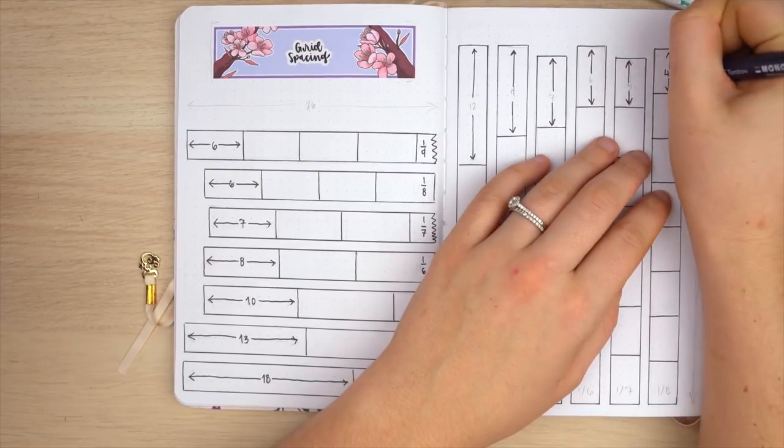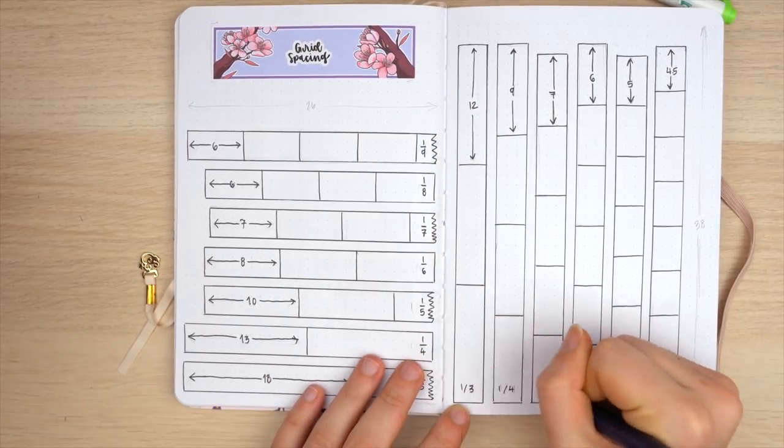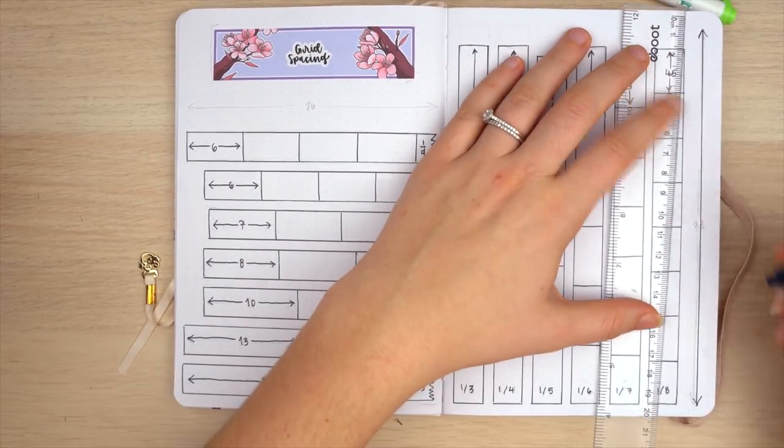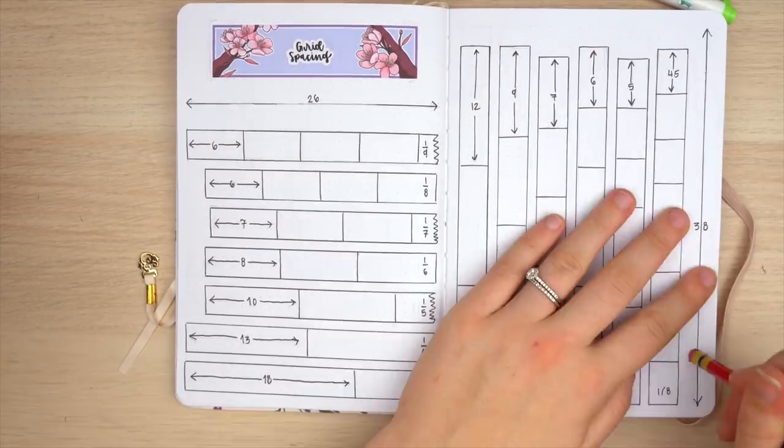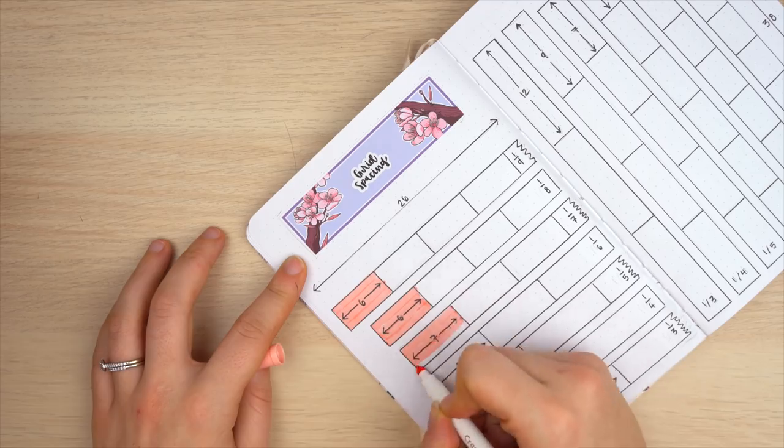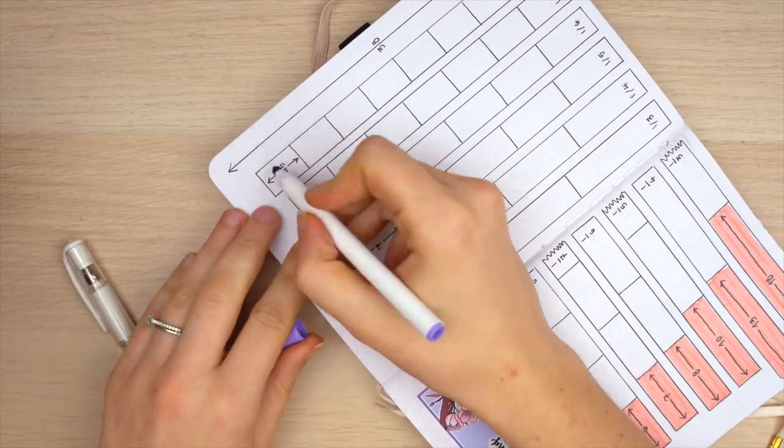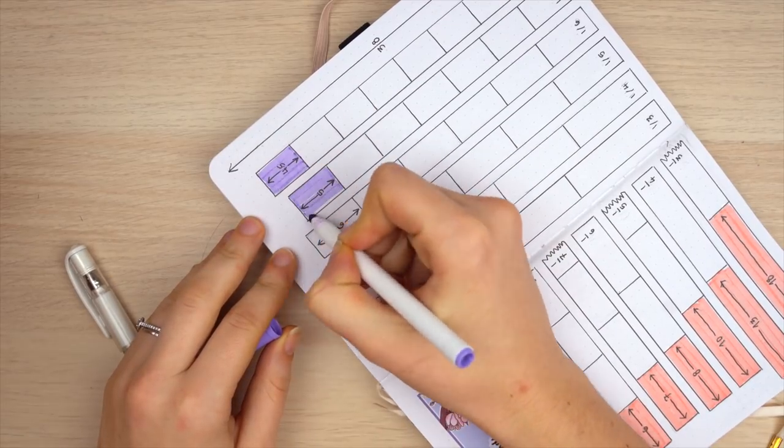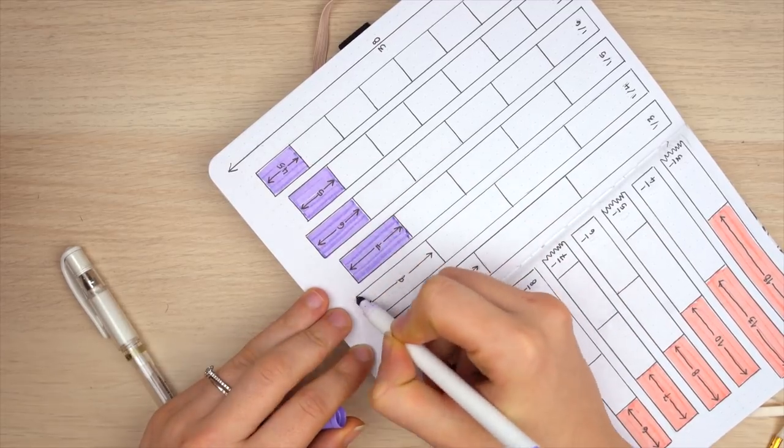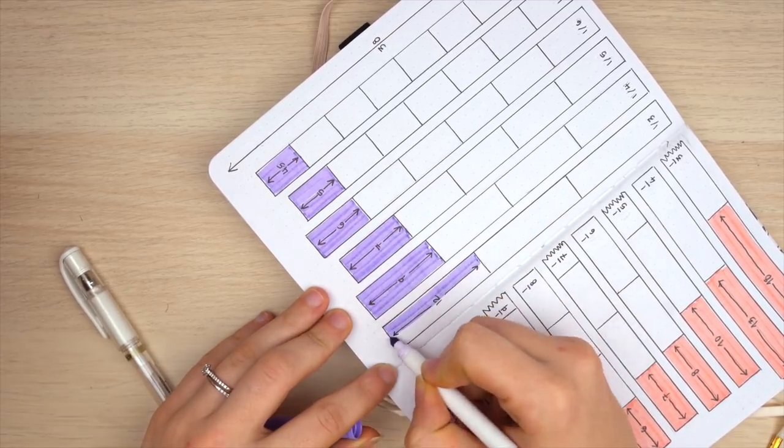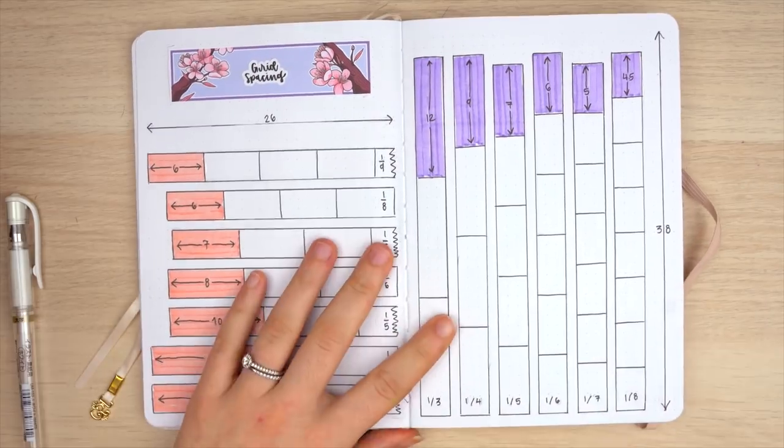And then on the right side, we have the spacing for rows - again, to split the page into three rows, four rows, five rows, six rows, seven rows, all the way up to eight. I sometimes find that grid spacing spreads can be a bit confusing, so I really tried to lay this one out in a way that made the most sense. So I'm coloring in what would be the height or the width of a row or column, and I feel like this is going to be very useful for me - I'm not going to have to be messing around with my ruler nearly as much.